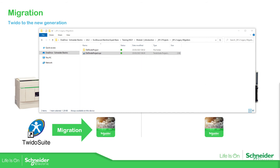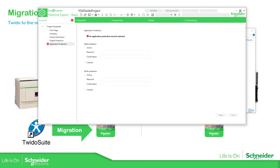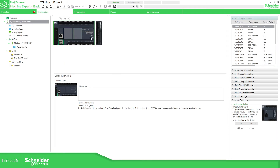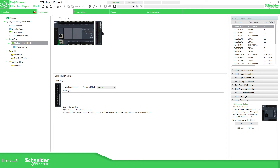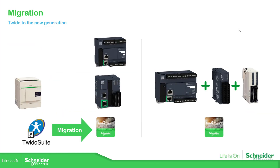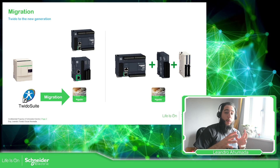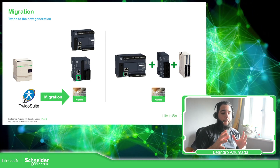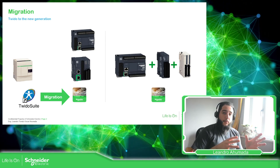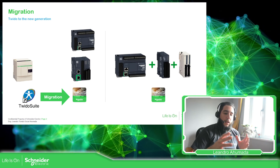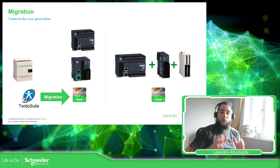If we go to the window and the configuration, the TM2 module has been replaced with the TM3 equivalent. We have seen in this part of the module that if you have an old PLC like the Twido, you can directly migrate it to the Modicon M221.